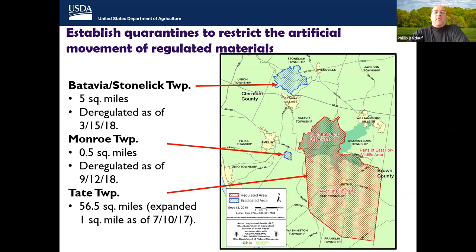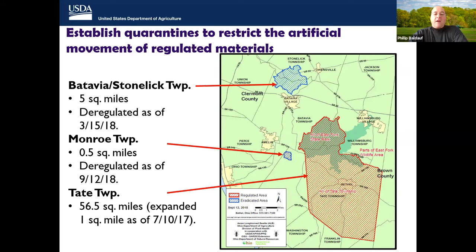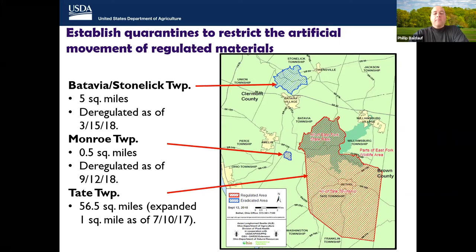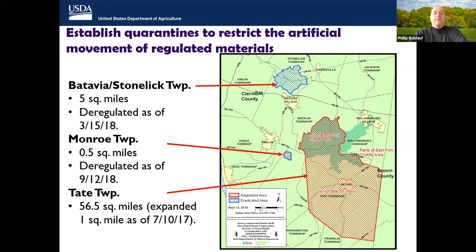Soon after ALB was detected in 2011 in Ohio, the main quarantine was codified, including Tate Township, East Fork State Park, and portions of the East Fork Wildlife Area — shown in red on the map. The main purpose of the quarantine is to restrict human-assisted movement of materials that could spread ALB to new areas, making it illegal to move ALB or anything that could harbor any ALB life stage outside of the quarantine boundary.